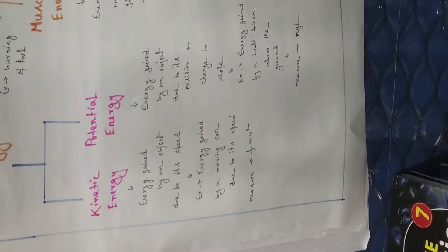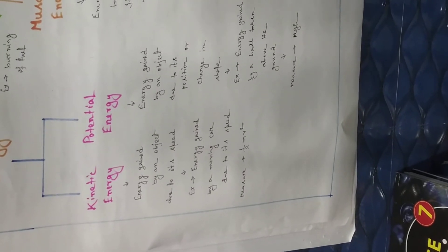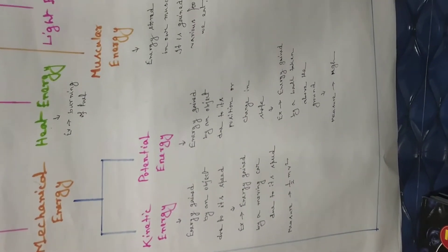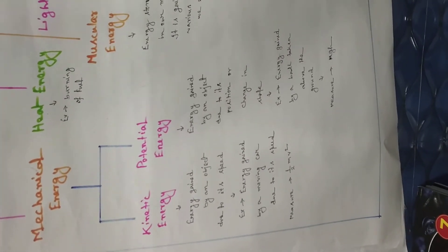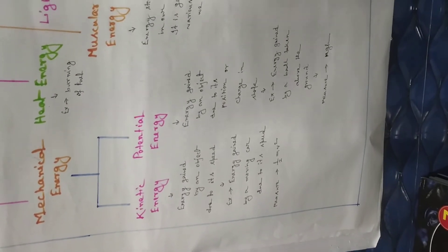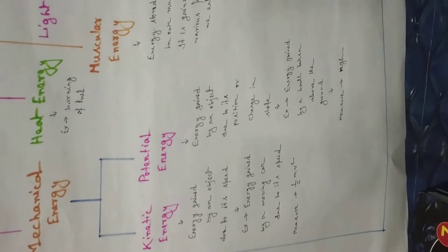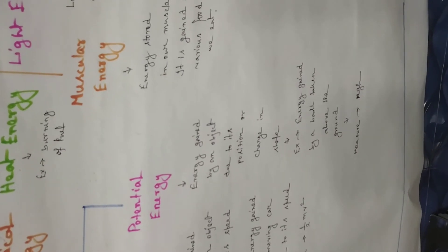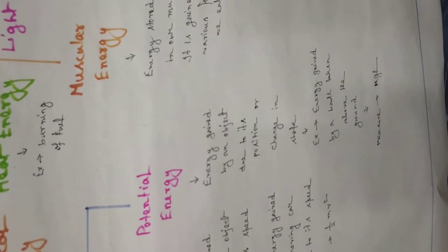Because of the position or height of the ball, the ball is able to do some work. When we take the ball to a very high position, it gains energy due to its position, and that energy is known as potential energy. The measure of potential energy is mgh, where m is the mass of the ball, g is the gravitational acceleration — which is 9.8 or 10 meters per second squared — and h is the height of the ball.